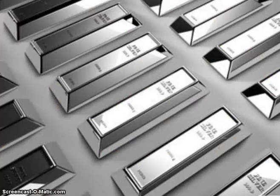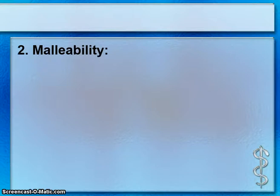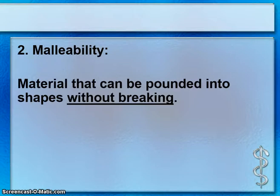The shiniest of all is silver, Ag. Number two, the second physical property: materials that can be pounded into shapes without breaking — that term is called malleability. Make sure you underline that it's without breaking.